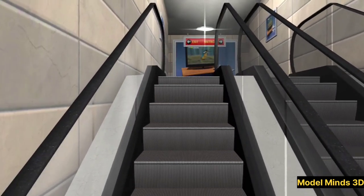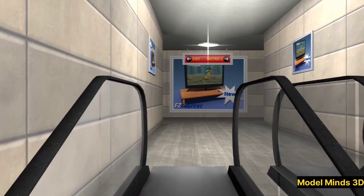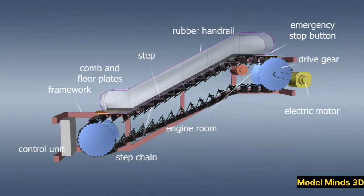Tracks. These are rails that guide the movement of steps, ensuring a smooth transition between the top and bottom. Drive mechanism. The motor and chain system power the movement of steps. Safety sensors. These are in place to detect obstructions and stop the escalator in case of emergencies.